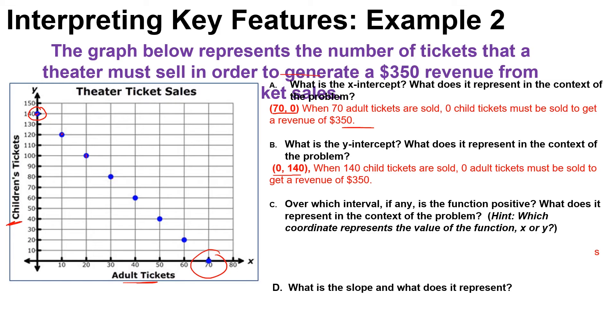This tells us 140 child tickets are sold, zero adult tickets must be sold to get a revenue of $350. So the ordered pair here, remember (70, 0) because that's our x-intercept. The ordered pair here would be (0, 140).